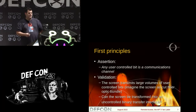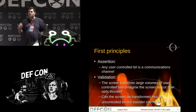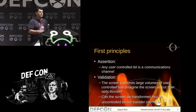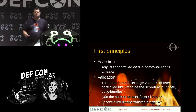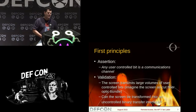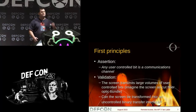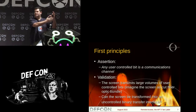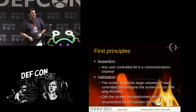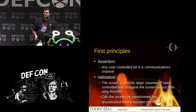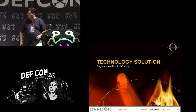Let's start with the problem space — first principles. My assertion is that any user-controlled bit is a communications channel. The validation for this is that the screen transmits large volumes of user-controlled bits. I want you to imagine the screen as a fiber optic cable that's been cut through — huge amounts of data is being pumped out into the room. So the question is: can the screen be transformed into an uncontrolled binary transfer interface?